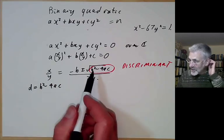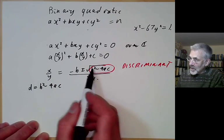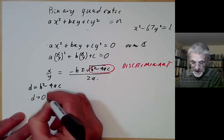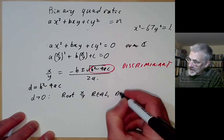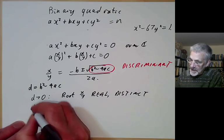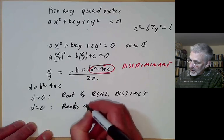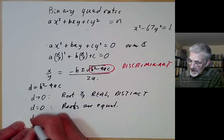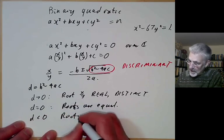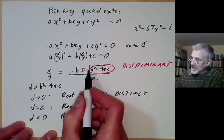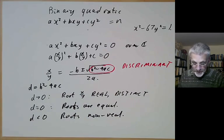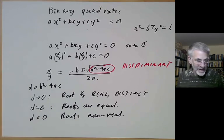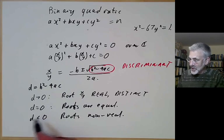The behavior of the form depends on the sign of the discriminant. If d is greater than zero, the roots x over y are real and distinct. If d equals zero, the roots are equal. If d is less than zero, the roots are non-real, because we're taking the square root of a negative number, giving a multiple of i. The case when d equals zero is kind of boring — it's trivial to find integer solutions, so we generally ignore this case.